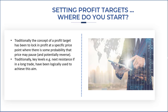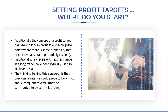Traditionally, if we're going long for example, we would potentially use the next resistance level to achieve the same. The thinking behind this approach is that previous resistance could prove to be a pivot and subsequently reverse, and of course this may be contributed to by sell limit orders that may already be placed on the market.